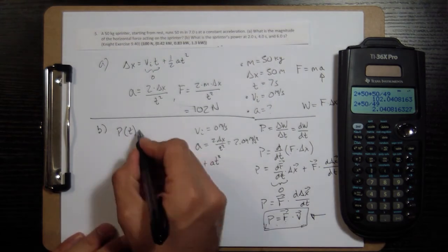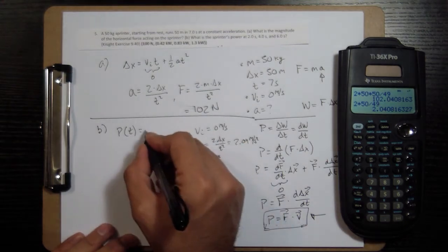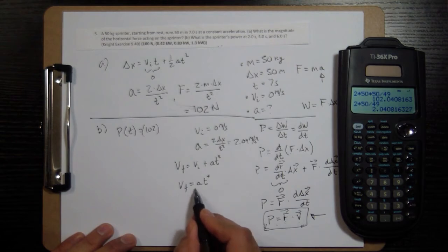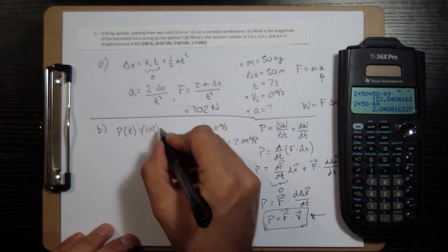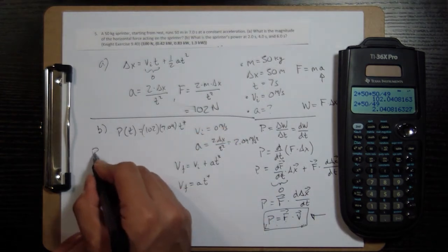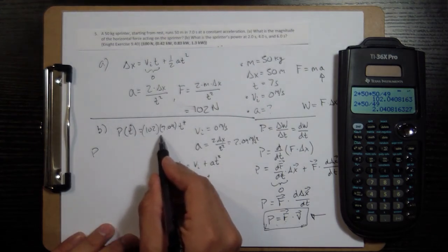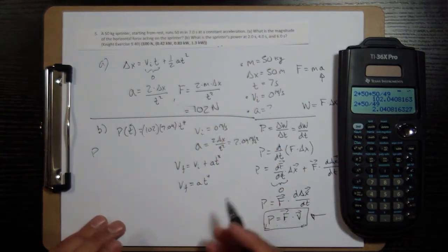So now, my power as a function of time is going to be my force, which is 102, times my v final, which is acceleration times time. And my acceleration is 2.04 times my time. I'm going to use star. This might have to be a star here. And so all I have to do is multiply these and then multiply times the time, which will be 2, 4, and 6 seconds. And that will give us what we need.